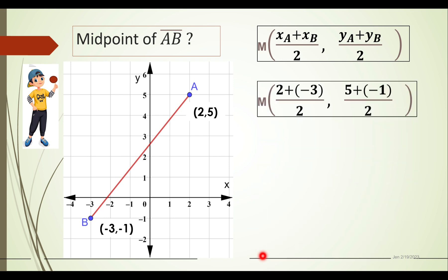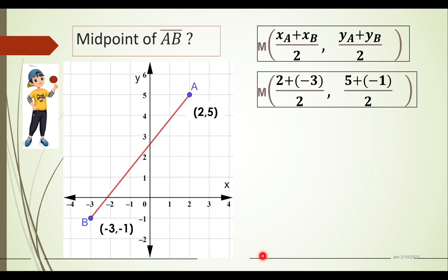Since we have correctly identified the coordinates, all we have to do is substitute into the formula. We have x sub A — using the name of the point rather than x₁ — and x sub A is 2.